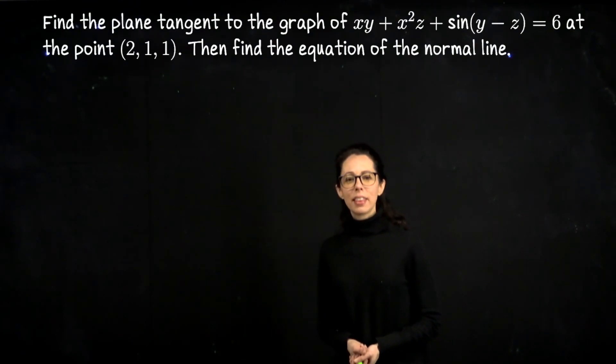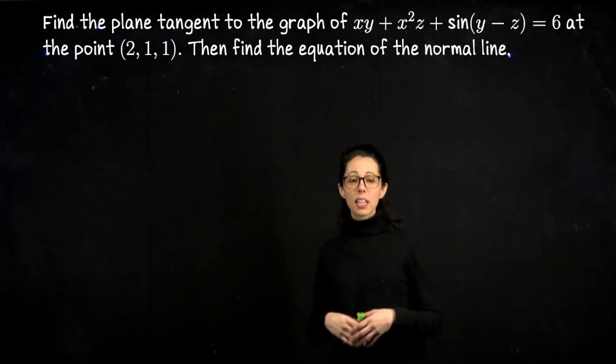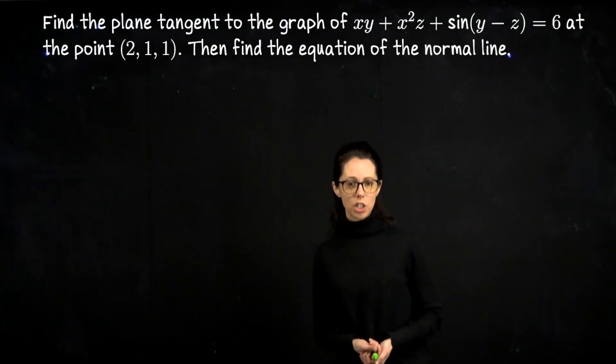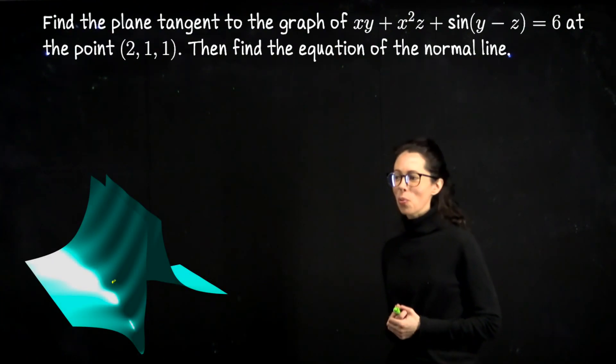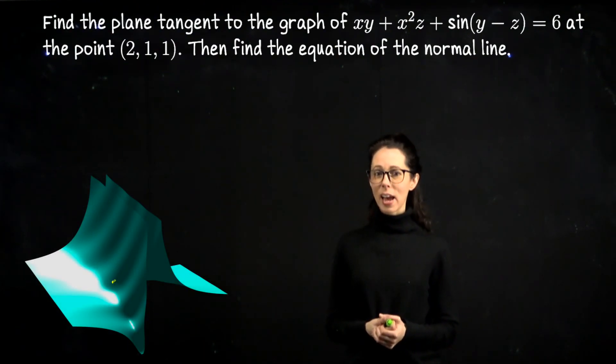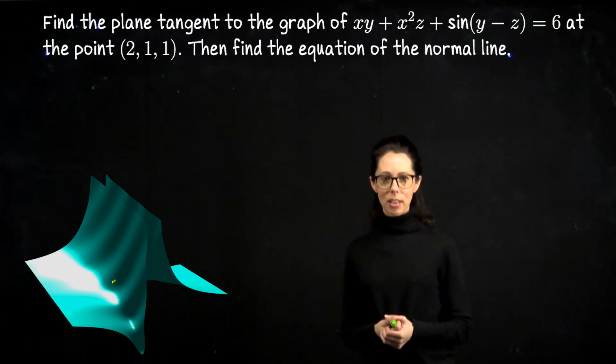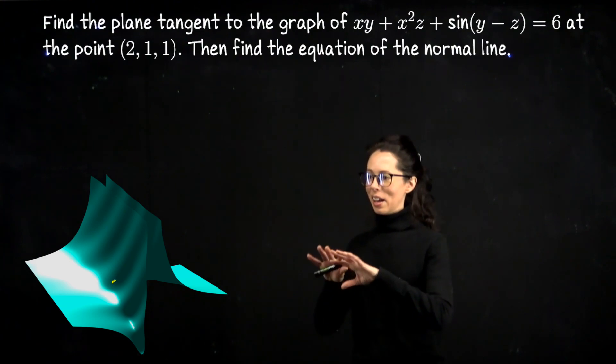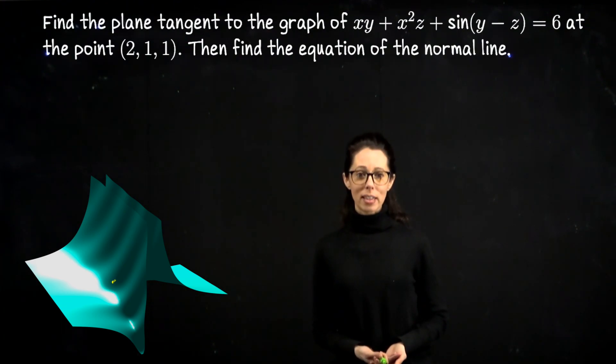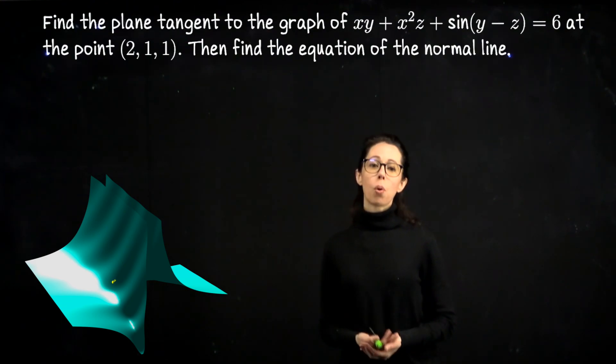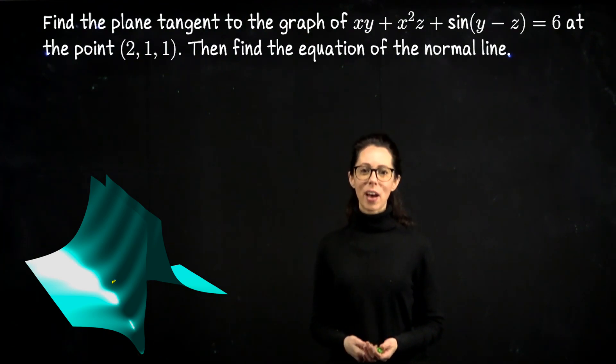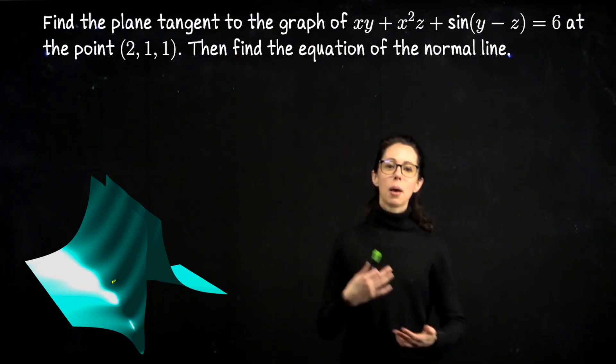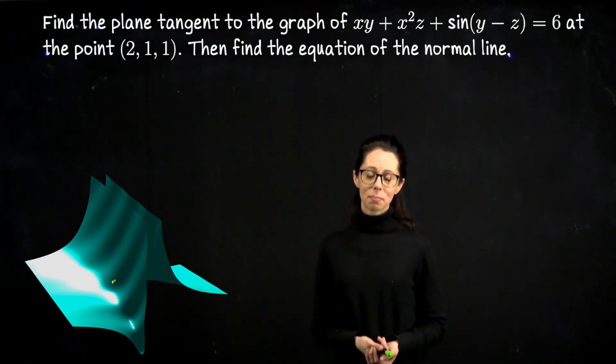The equation that we are given relates x, y, and z. It's not a function. Let me put up a picture of what the set of points x, y, and z which make this equation true looks like. We're looking at a visualization of a set of points in three-dimensional space, the set of points which when you plug them into this equation satisfy that the x coordinate times the y coordinate plus the x coordinate squared times z plus sin(y - z) equals 6.